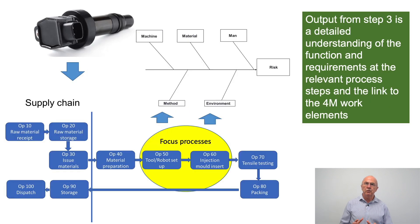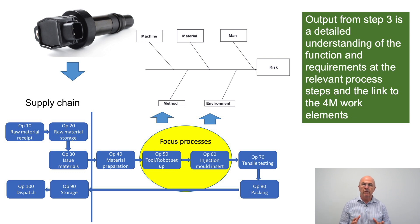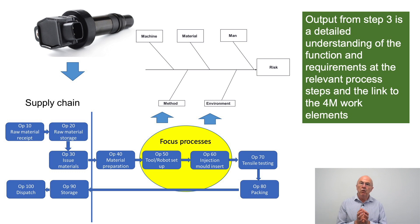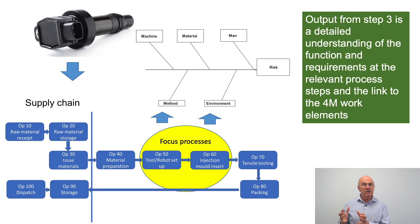In steps one, two and three we would have gained a really good understanding of the proposed process flow. We would have focused on particular steps in the process and then understood the 4M conditions. We would also understand the function of the overall product, of the process step, and of the specific 4M work elements. Remember in step three we were looking at function and requirements. Now we are ready to go into step four.